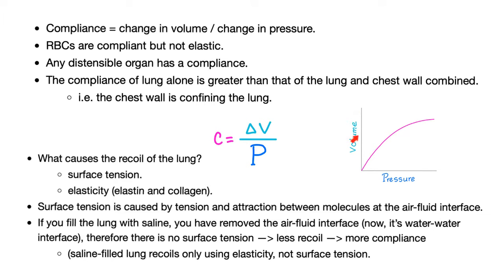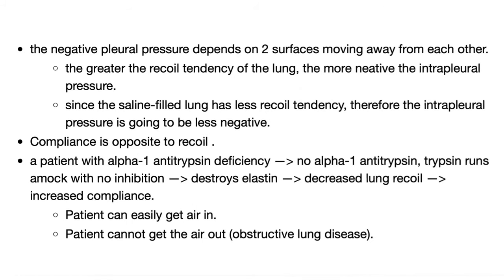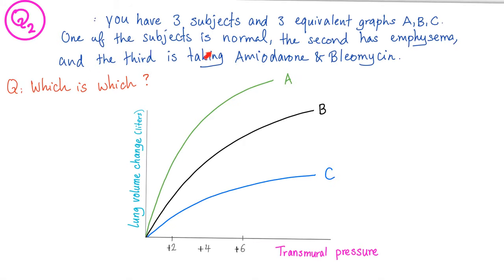Compliance is the expansibility of the lung (ΔV/ΔP). Recoil — the opposite of compliance — is caused by surface tension and elasticity. Emphysema raises compliance. Does emphysema cause air trapping? Yes — in obstructive lung disease, you cannot get the air out. It's very easy to get air in, but very hard to get it out, causing air trapping and barrel chest. On a pressure-volume curve, one curve is normal, one shows emphysema (highest compliance, leftward shift), and one shows pulmonary fibrosis from amiodarone and bleomycin (lowest compliance, rightward shift).